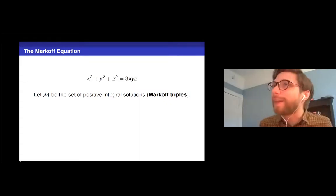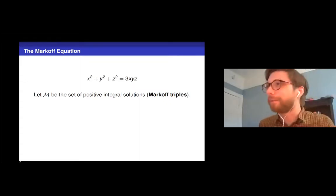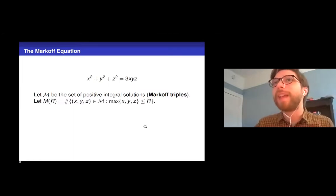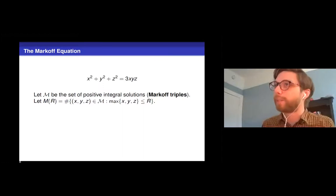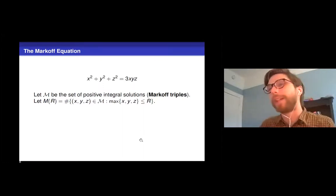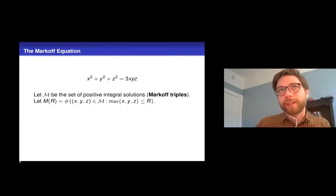So if we denote by M the set of, let's say, positive integral solutions to this equation, we'll call these the Markoff triples. And maybe we denote this function m(r), which is counting the number Markoff triples with maximum coordinate less than or equal to r. Then there are some results out there that give some asymptotics for this m(r) function.